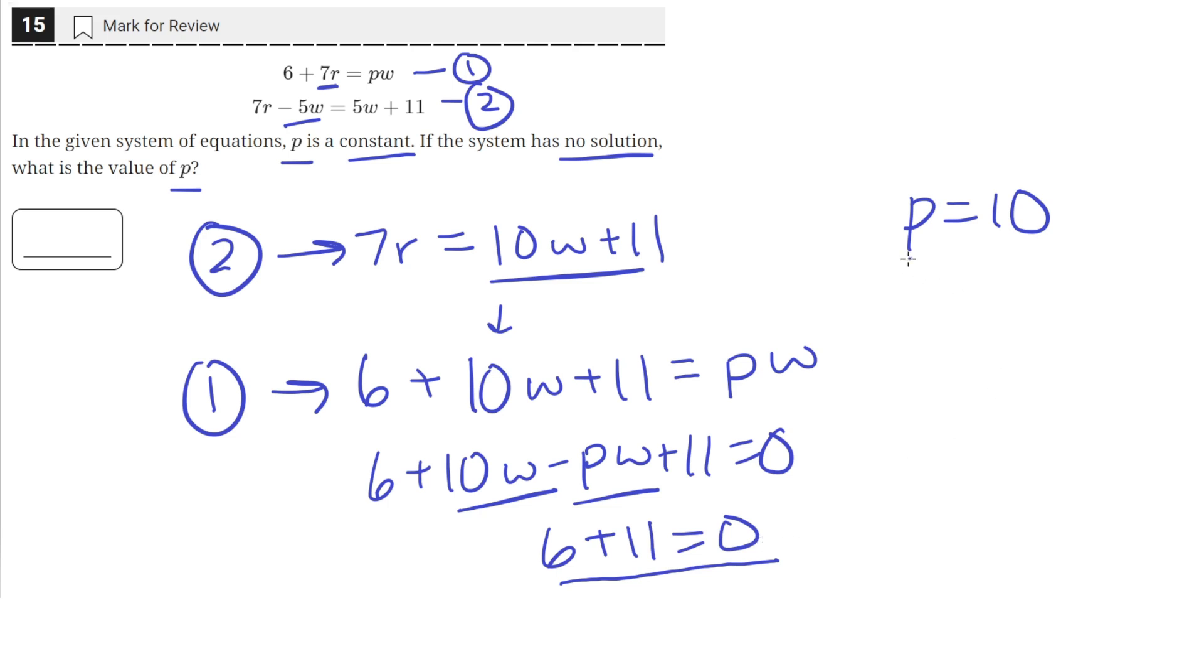So for a value of 10 for p, the system of this equation here results in an untrue statement, which means that the system has no solution when p equals 10.